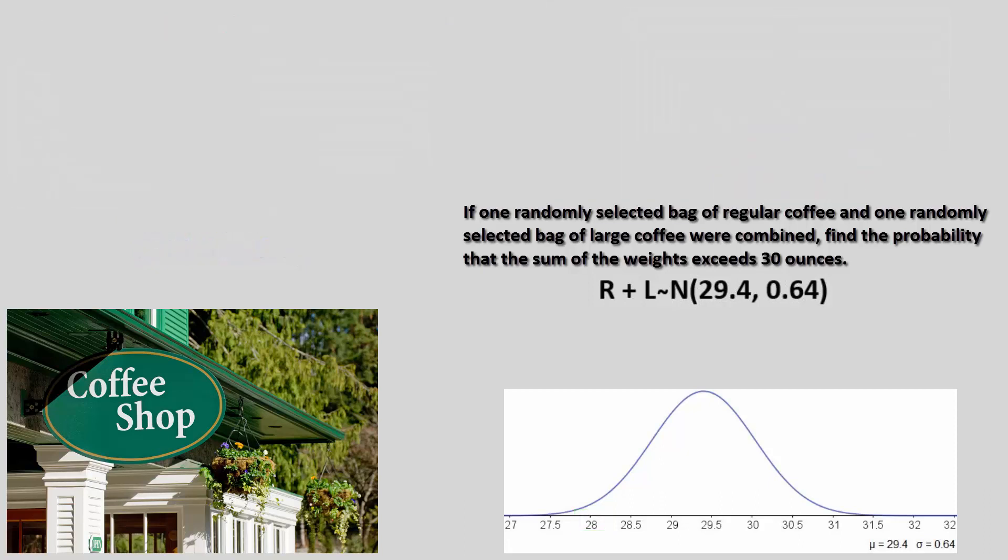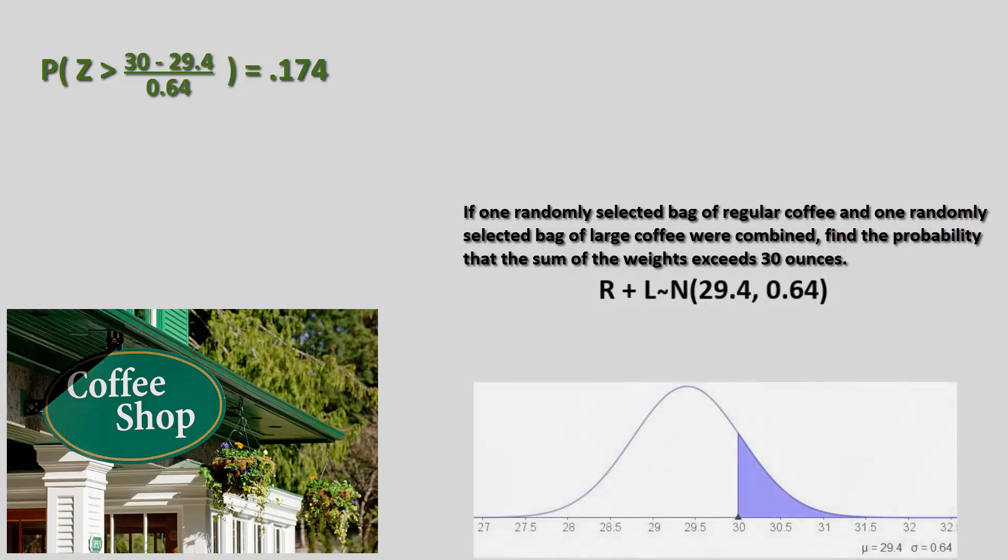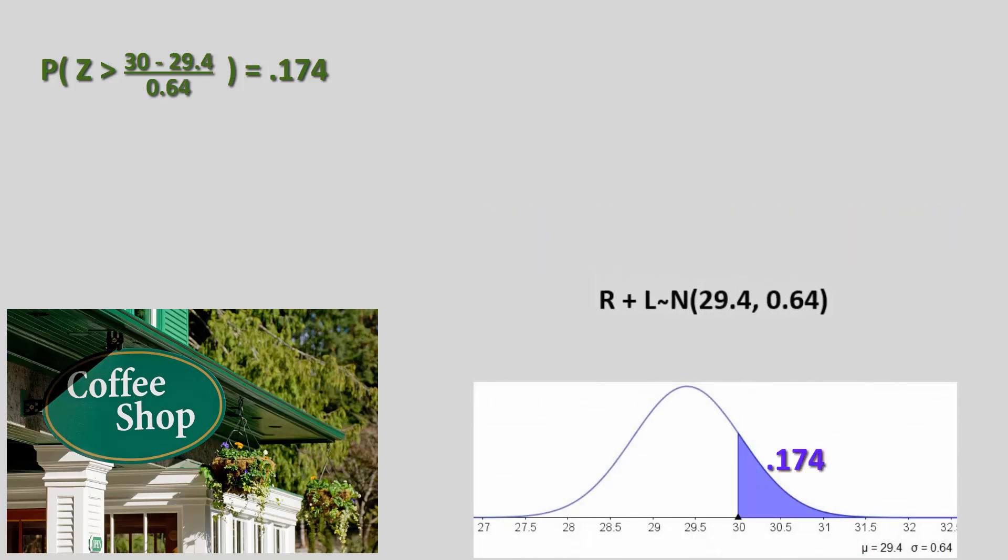Once we identify the joint distribution, this is a typical probability involving a normal distribution. We show the work by showing that we are calculating the probability of getting a z-score associated with any weight above 30 ounces, and then we use the t-table or the normal CDF on the calculator to determine the probability to be 0.174.